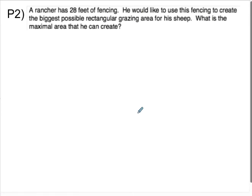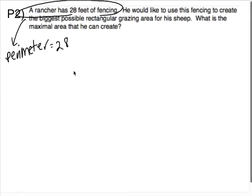All right, try P2, and this will be the end of this video. A rancher has 28 feet of fencing. He would like to use this fencing to create the biggest possible rectangular grazing area for his sheep. What is the maximal area he can create? So 28 feet of fencing is perimeter. You're assuming since he wants to make the largest possible fence, he's going to use all 28 feet. And maximal area. So what you're maximizing is the area.